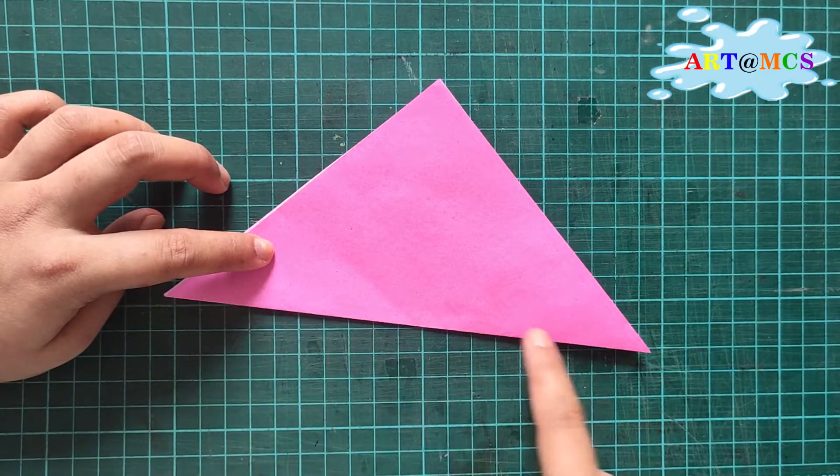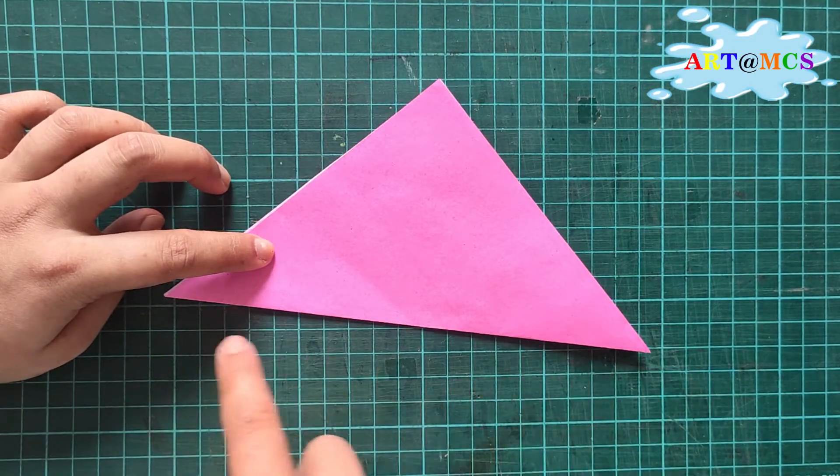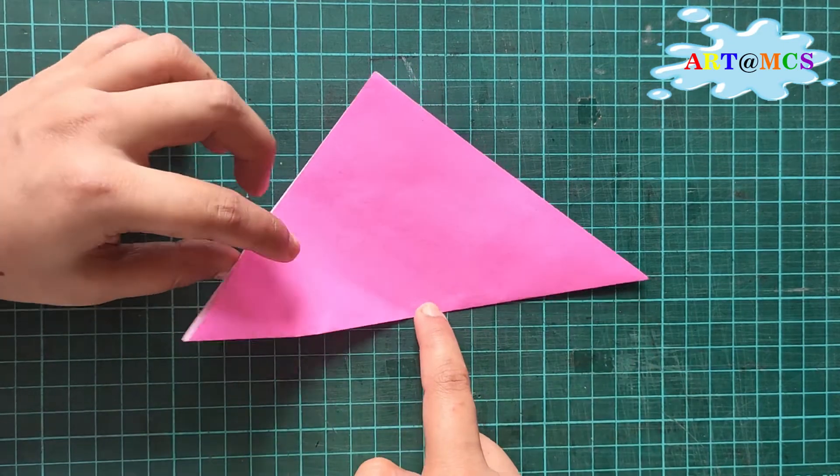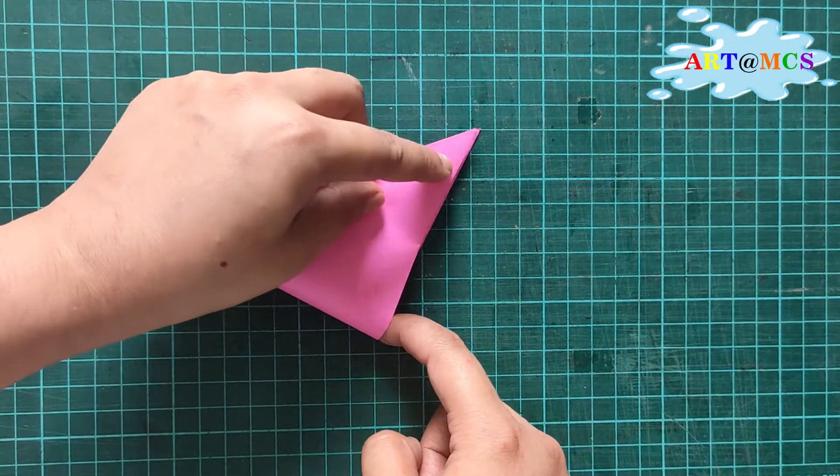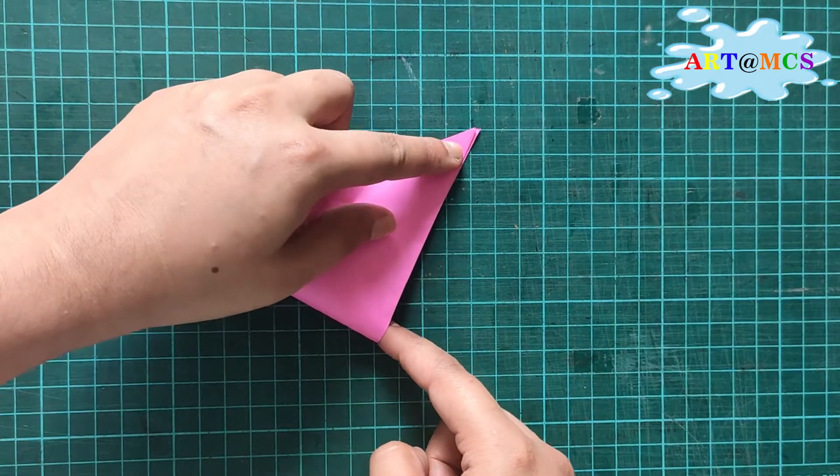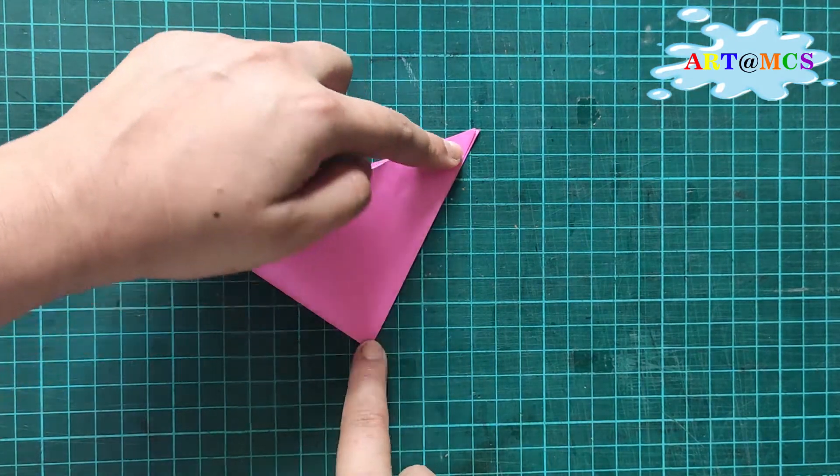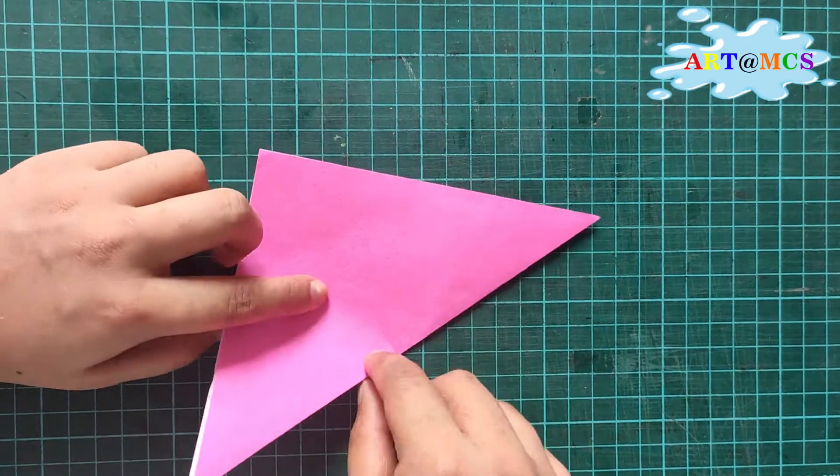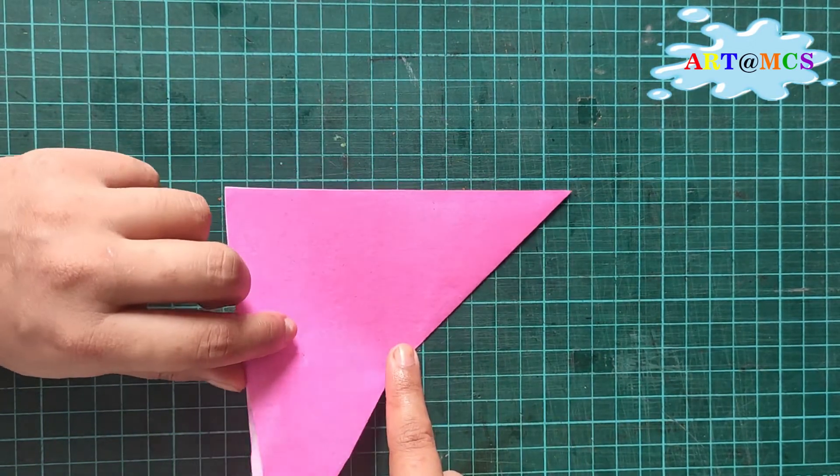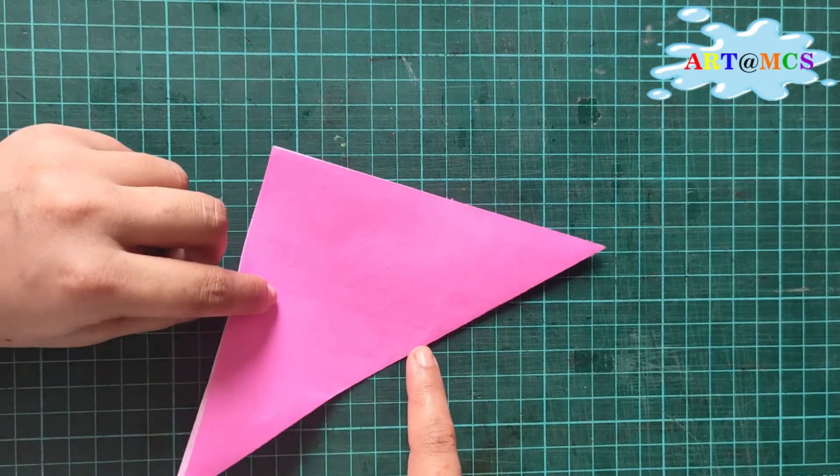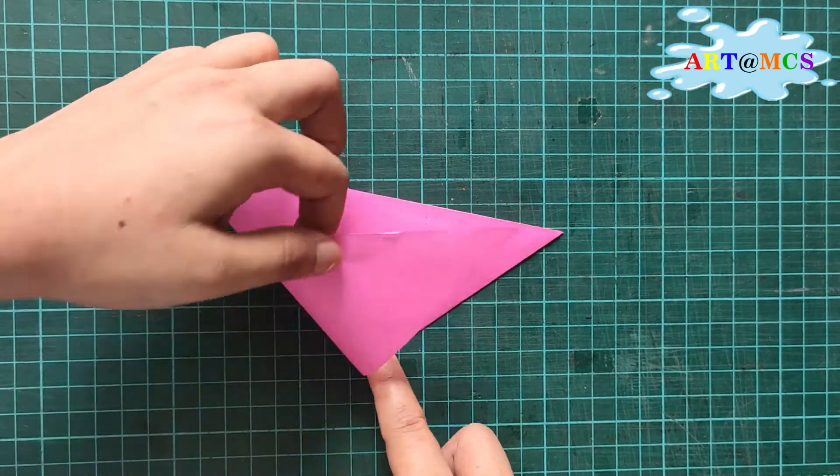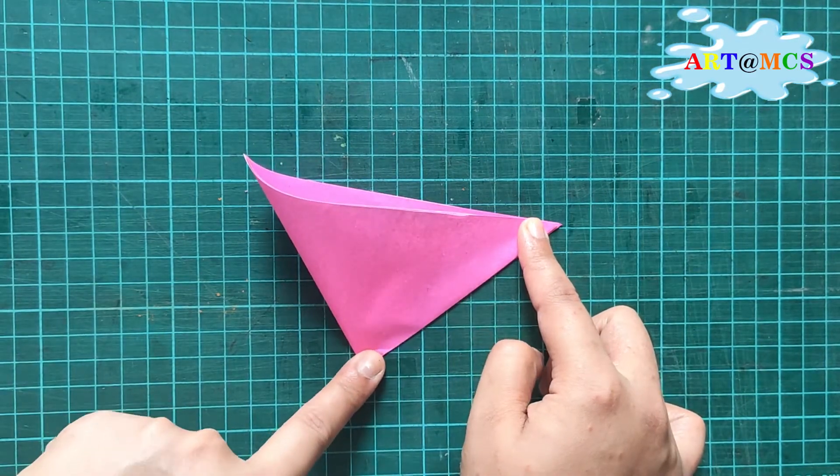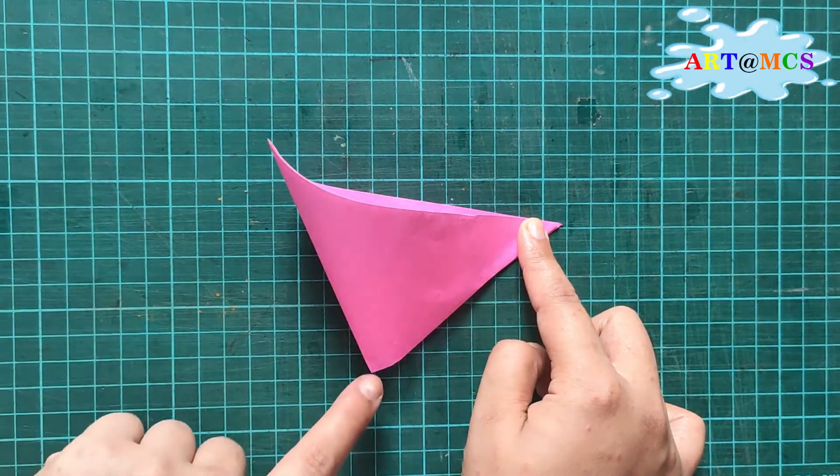Now from the long side, bring one corner to the other corner. Match these two corners and press from here—you don't have to press the whole line, just a little bit so that when you open this, you get a little mark.